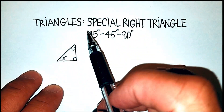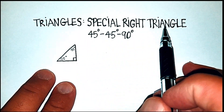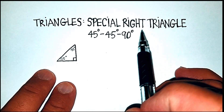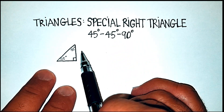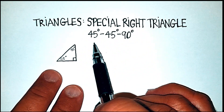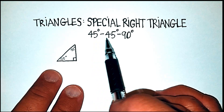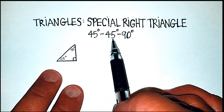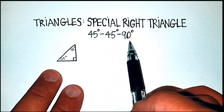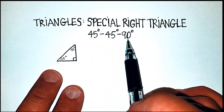In this video, we're going to go over something called special right triangles. Specifically, we're going to go over the triangle that's known as a 45-45-90 degree triangle.